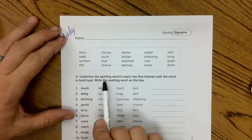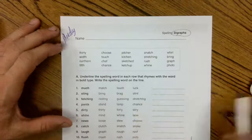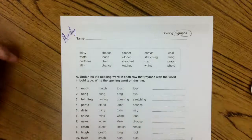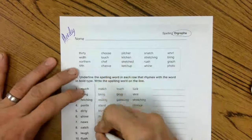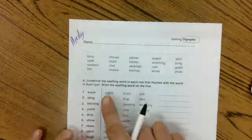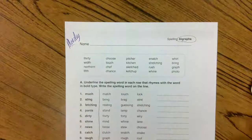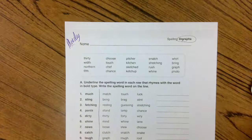Our assignment is going to be to underline the spelling word in each row that rhymes with the word in bold. Write the spelling word on the line. Remember, they've got to be spelling words. We're trying to rhyme this word with one of these, and one of these has to be a spelling word.